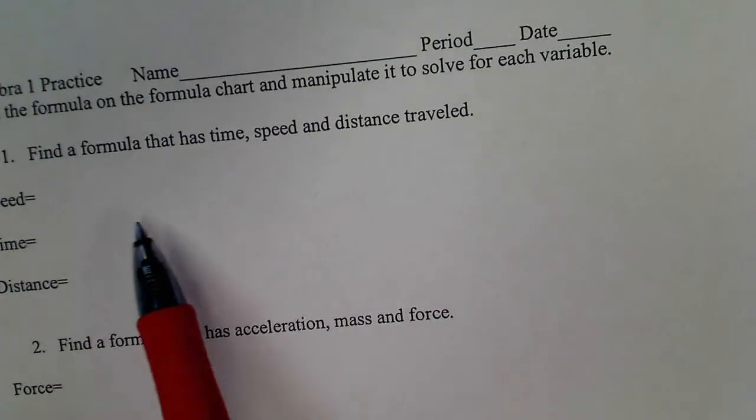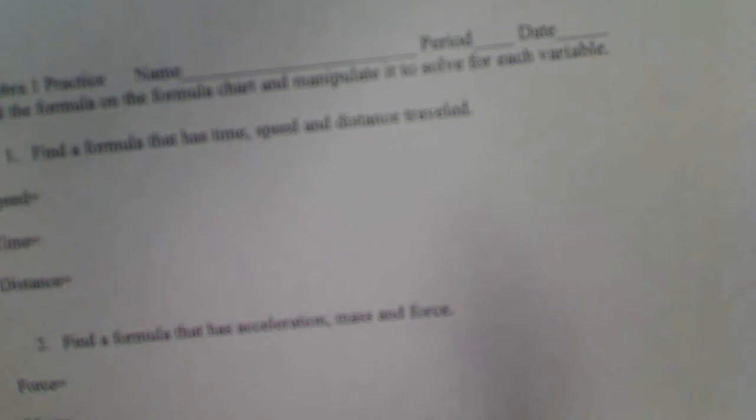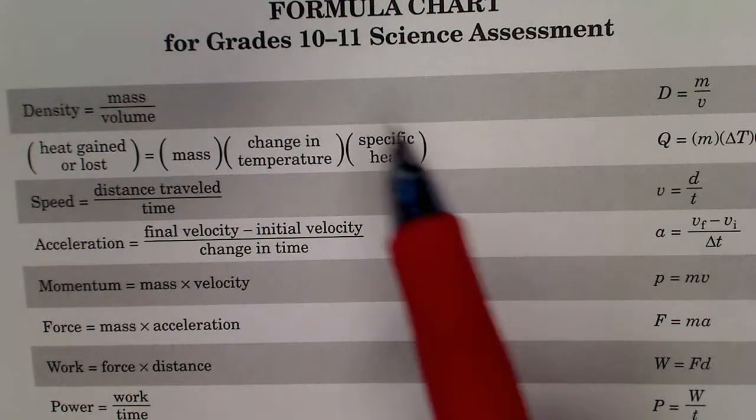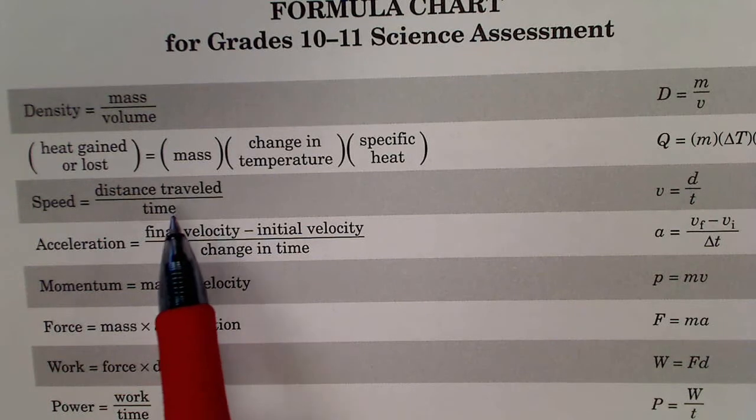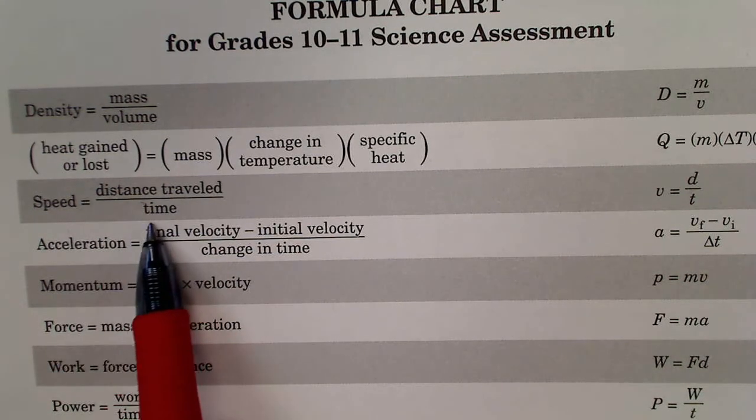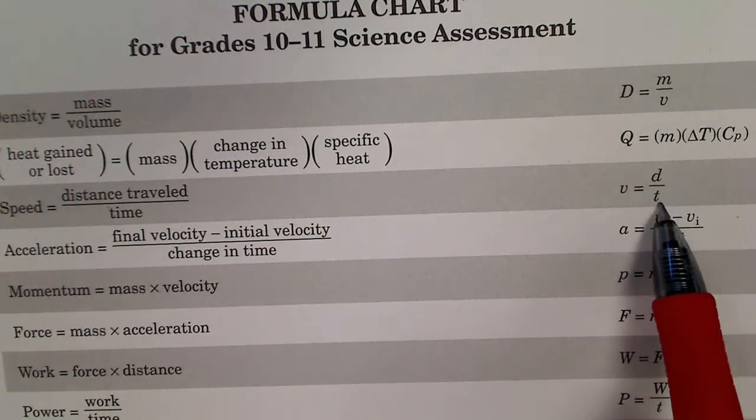So, it asks, find a formula that has time, speed, and distance traveled. Now, it's pretty straightforward if we look on our formula chart. We can literally look for those words exactly. Now, we're going to find that writing out these words over and over will eventually become pretty time-consuming. So, we're going to use these abbreviations. V equals D over T.